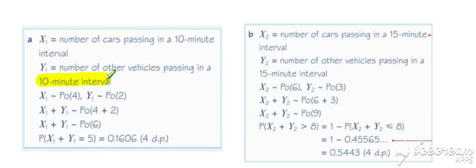So in a 10-minute interval, X would have a lambda value of 4, and Y would have a lambda value of 2. We've adjusted those lambda values for a 10-minute interval. And if we want a combination then of any vehicle, then we've got X plus Y, so X plus Y has a lambda value of 6. And then we want to work out the probability that there were 5 occurrences.